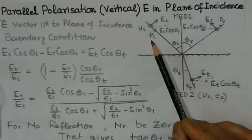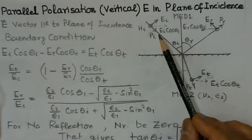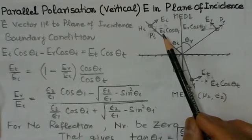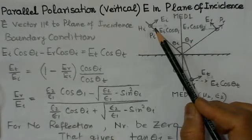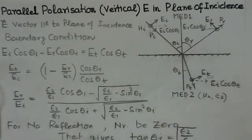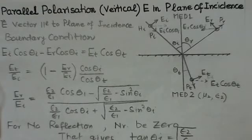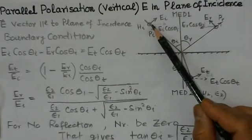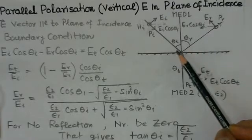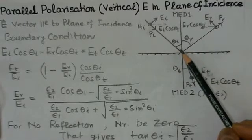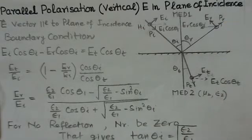In the case of parallel polarization, also sometimes called vertical polarization, the electric field is parallel to the plane of incidence. If we look at the electric field as parallel to the plane of incidence, all the E-fields are in the plane of incidence, and we call it parallel polarization since the field is in the plane of incidence.